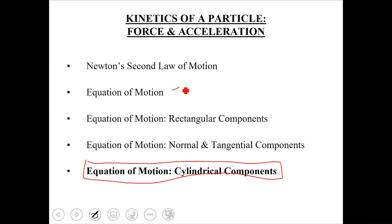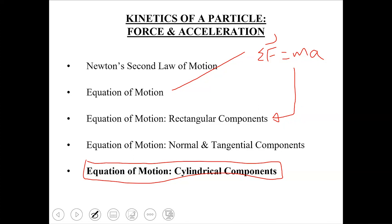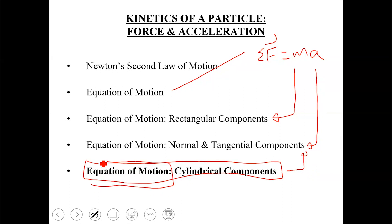Just a quick review of last week's lecture. In this chapter, we started with the Equation of Motion, which is basically ΣF = ma. We wrote this equation in terms of its rectangular components — resolving force and acceleration into x, y, and z axes. Then in the next topic, we applied the same equation in terms of normal and tangential components, resolving forces along the normal, tangential, and binormal axes.